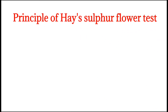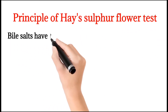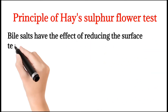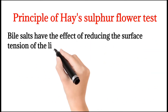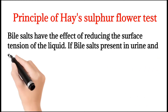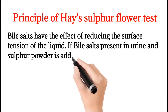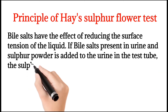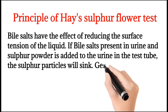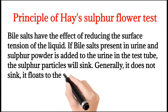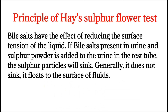The principle of the Hay's Sulfa Flour Test is as follows. Bile salts have the effect of reducing the surface tension of liquid. If bile salts are present in urine and sulfur powder is added to the urine in a test tube, the sulfur particles will sink. Generally, sulfur does not sink — it floats to the surface of the fluid.